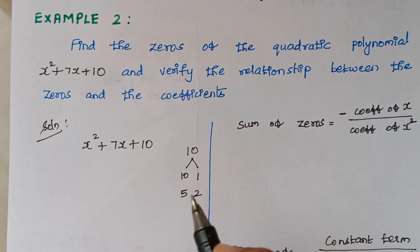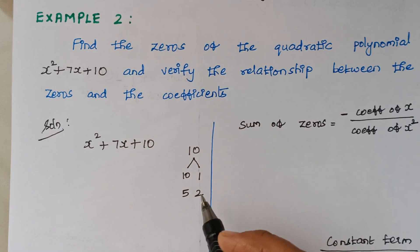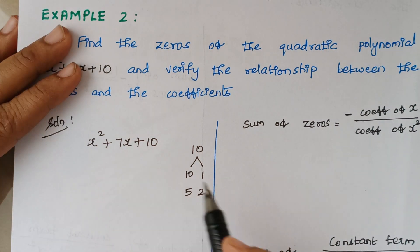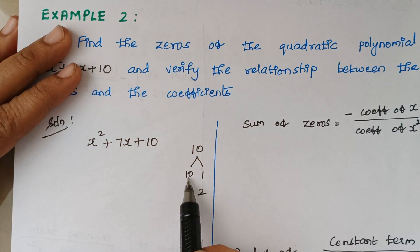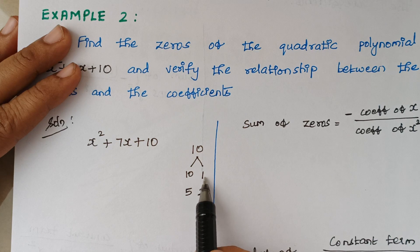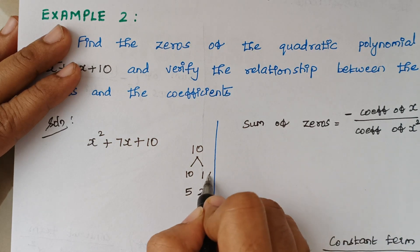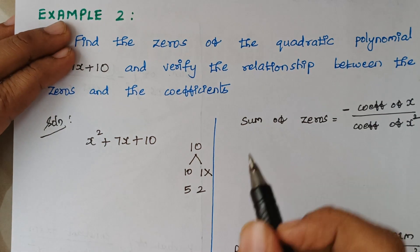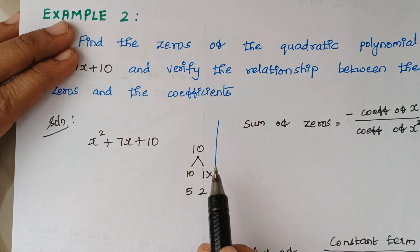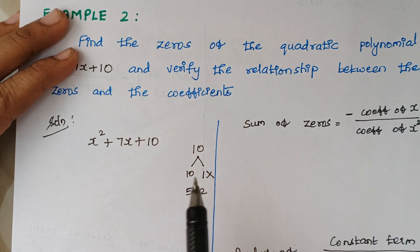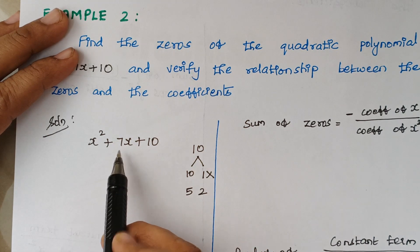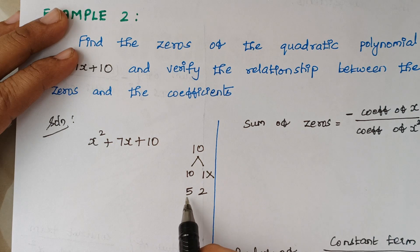When we add two numbers, we should get 7. We can't take the option 10 and 1, because when we add 10 plus 1 it gives 11, but we need only 7. So we can take the option 5 and 2.